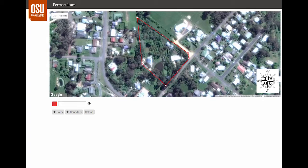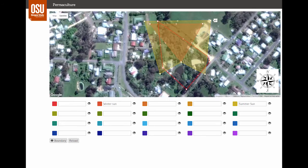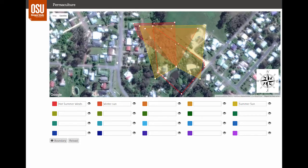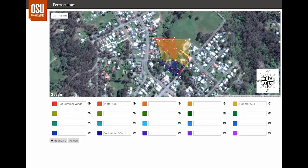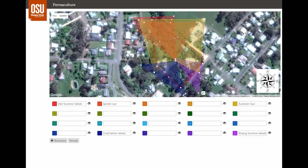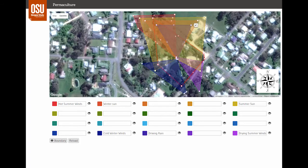We'll start out by drawing in the sectors. Because Meliodora is in the southern hemisphere, the winter and summer sun sectors are to the north. There are a number of winds mapped out for the site. You can see hot summer winds, cold winter winds, occasional strong dry spring and summer winds, and cool summer breezes which move in the same direction as the cold winter winds. David also has driving summer and winter rain mapped out, as well as the view of an elevated plain.